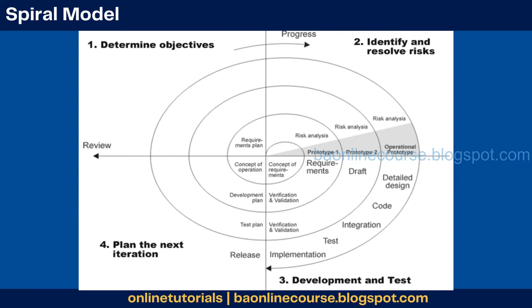The next one is the spiral model. This is usually used for very complex projects which are very critical, complex and hard to implement. Where there are too many risks involved in the system, you generally tend to go for a spiral model.